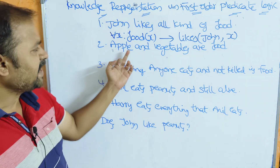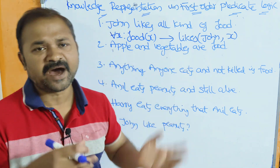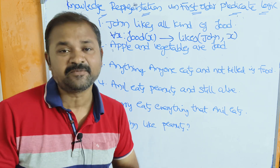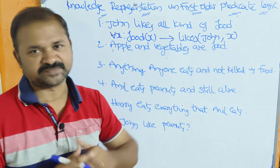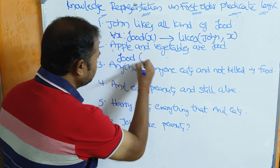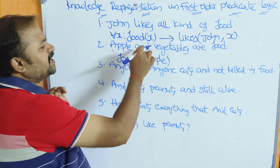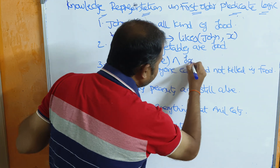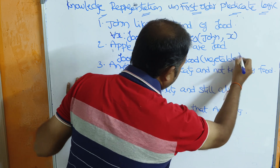The second fact: apples and vegetables are food. This is just like 'Marcus was a man', written as man(Marcus). So apples are food: food(apples). Food is the predicate and apples is the subject. And vegetables are food: food(vegetables). So we get food(apples) and food(vegetables).